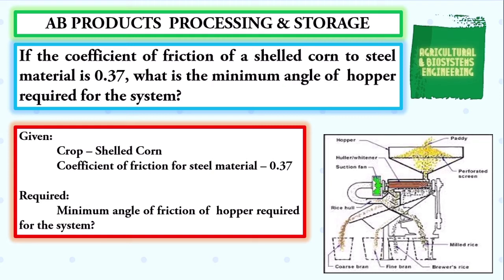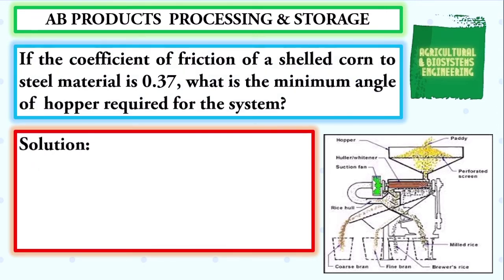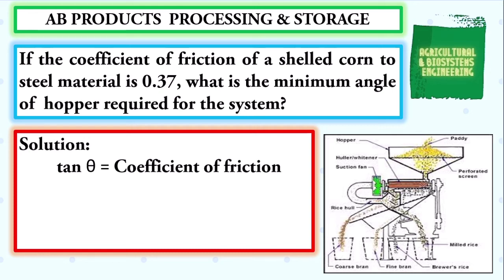After identifying the given and the required for our problem, we proceed with our solution. To solve for the angle of friction, we will be using the formula: tangent theta is equal to the coefficient of friction of the material. Note that theta is the angle of friction. To solve for theta, we derive the formula, giving us theta is equal to the arctangent of the coefficient of friction for steel, which is 0.37. We simply solve and we have the angle of hopper for the system to be 20.30 degrees.